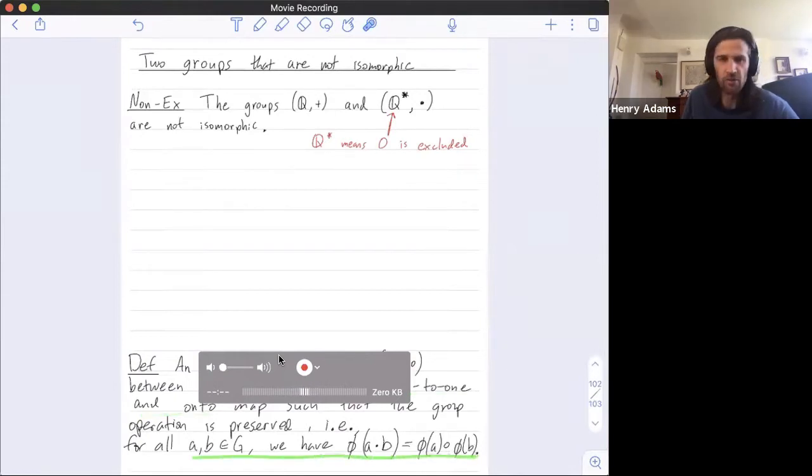And this is written in multiplicative notation, or I guess it's using a dot for the operation in G and circle for the operation in H.